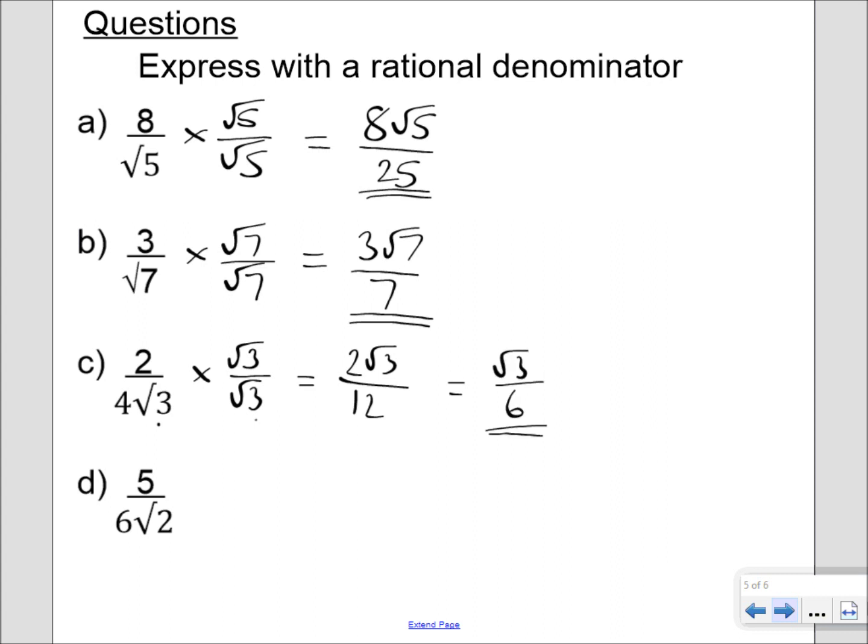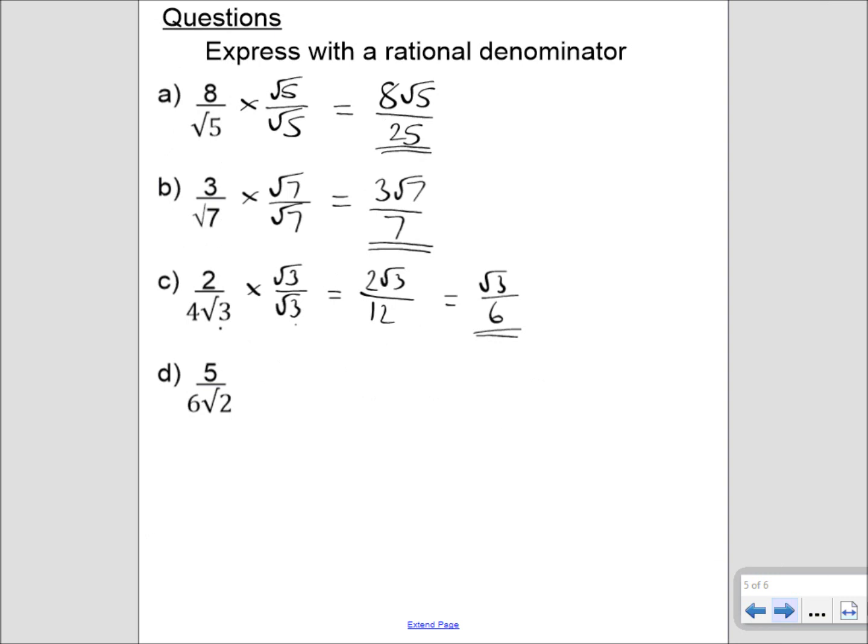And for this last one, we end up with us multiplying by root 2 over root 2, which gives me 5 root 2 on the top, and 6 times root 2 times root 2 is the same as 6 times 2, which is 12, and that there is my final answer.